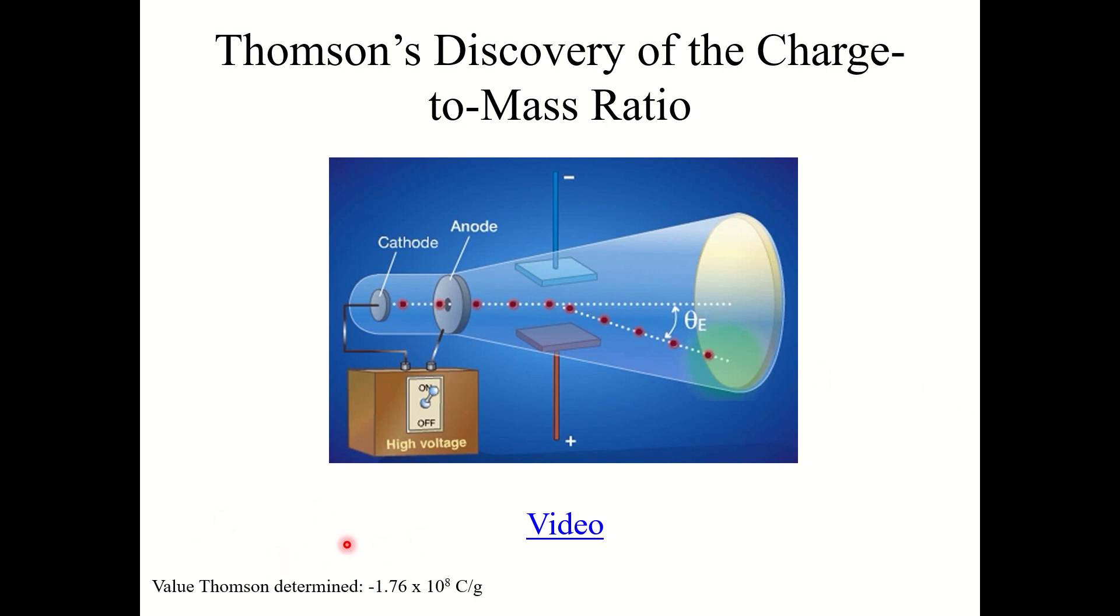Now the value he determined was that electrons have a charge-to-mass ratio of negative 1.76 times 10 to the eighth coulombs per gram. Coulomb being a unit of charge and electrons are negative, thus the negative charge. Now the currently accepted value is negative 1.75882001076 times 10 to the eighth coulombs per gram. So as we can see, well over a hundred years ago working with pretty rudimentary equipment, he got very, very close to the currently accepted value. So pretty impressive experimental work here done by Thomson.